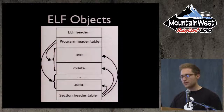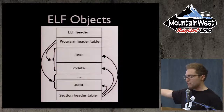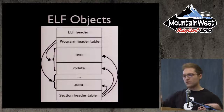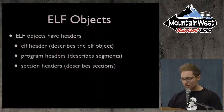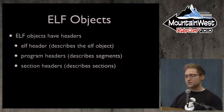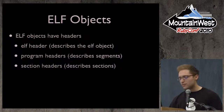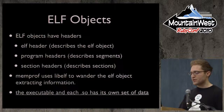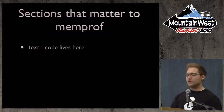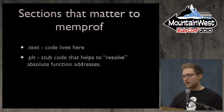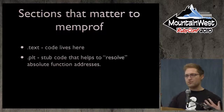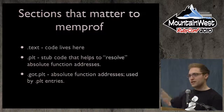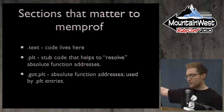ELF objects can be executables or libraries. Each shared library loaded into a process has its own independent set of headers, segments, and sections, all working together via the runtime dynamic linker. Headers describe the object; segments are collections of sections. Sections that matter for Memprof include the text segment (where code lives), the PLT (procedure linkage table, which helps resolve absolute function addresses since shared objects can be mapped anywhere in the address space), and the GOT.PLT (which the PLT uses for storage).